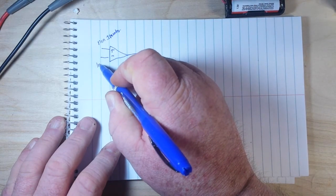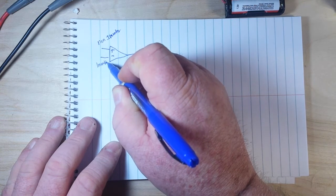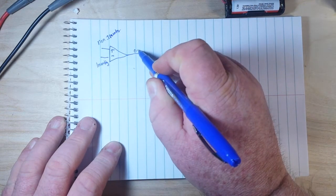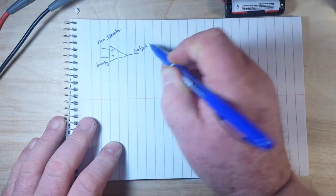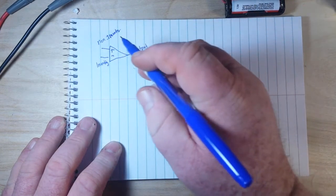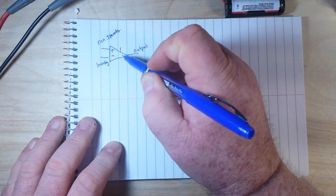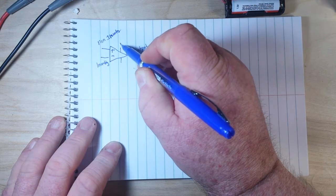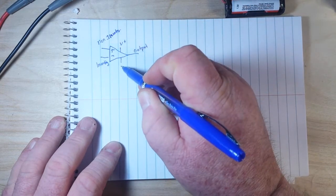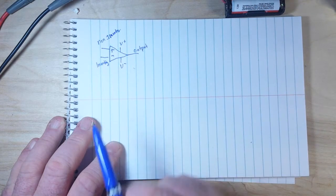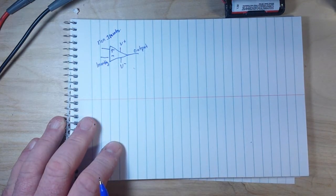And this is, of course, called the output. Now there are two other connections. We need a V plus and a V minus, two separate power sources basically, for this to work.